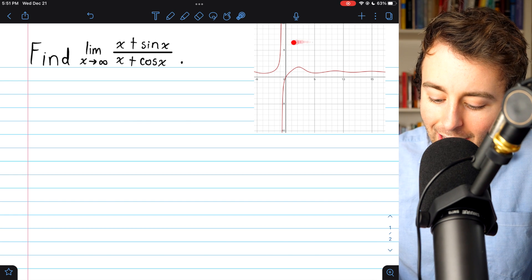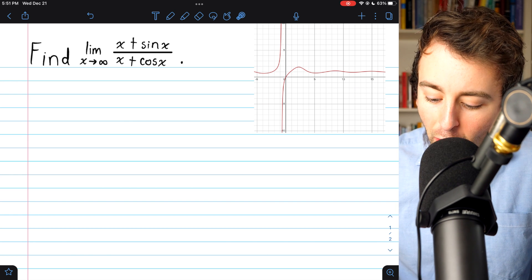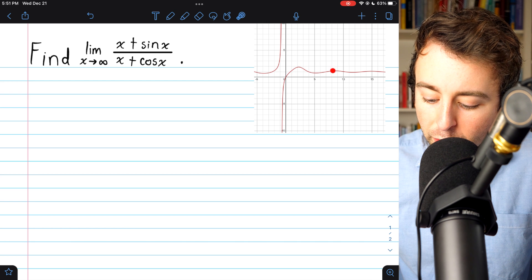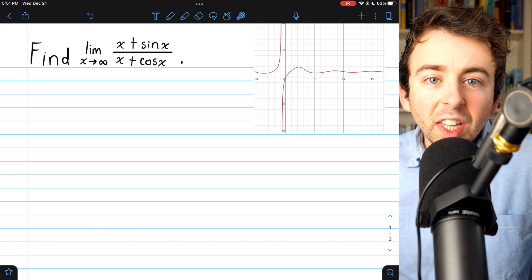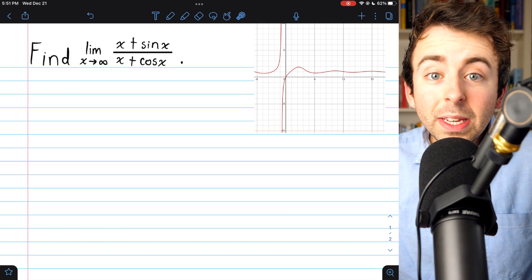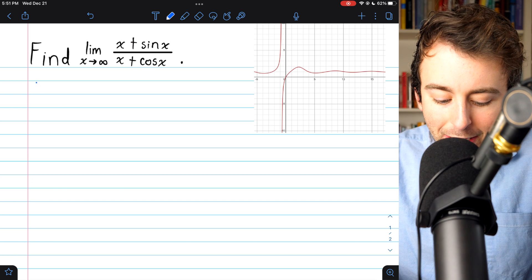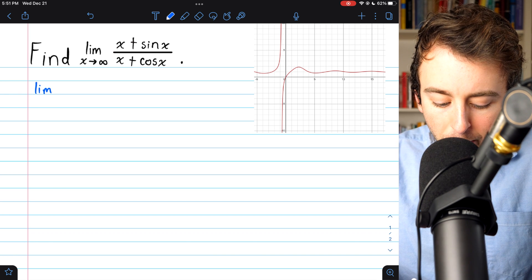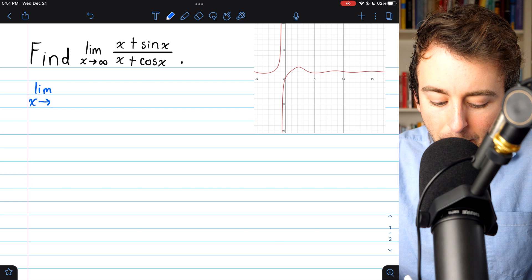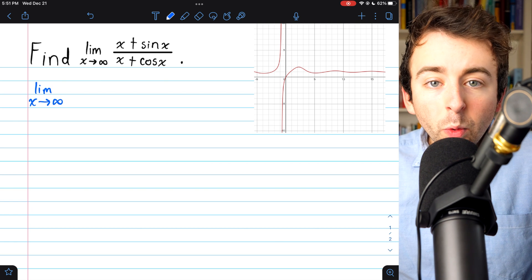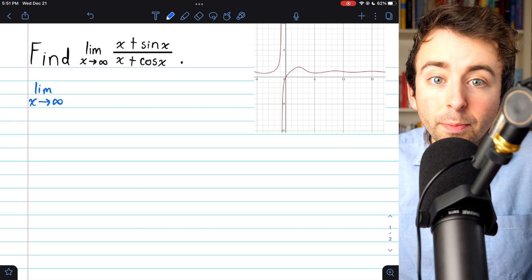And if we take a glance at the graph, we can see that start to happen. As x goes to infinity, the graph begins to level out towards positive 1. Because the x terms are the parts of this limit that are really big, this is a great opportunity to use a useful limit evaluation strategy, where we just divide out this biggest term.